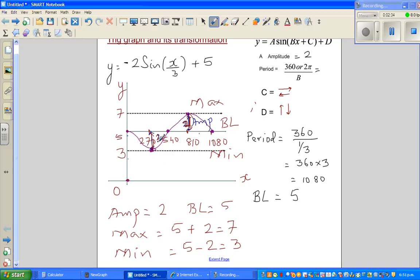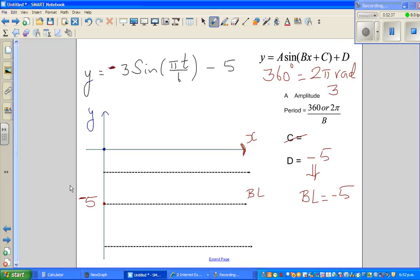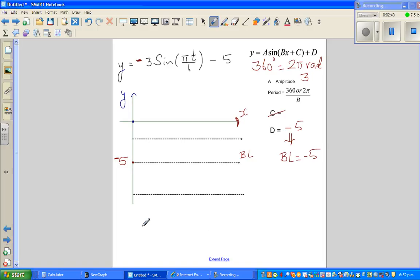Let me write the formula. Maximum is baseline plus amplitude, which is minus 5 plus amplitude. What is the amplitude? Amplitude is 3. So minus 5 plus 3 is minus 2.